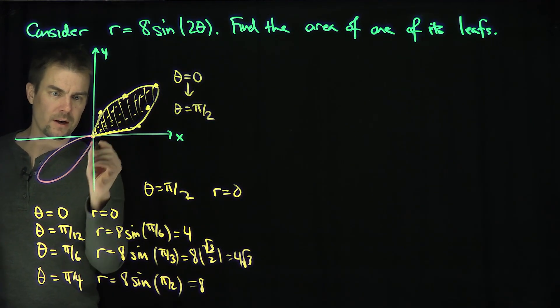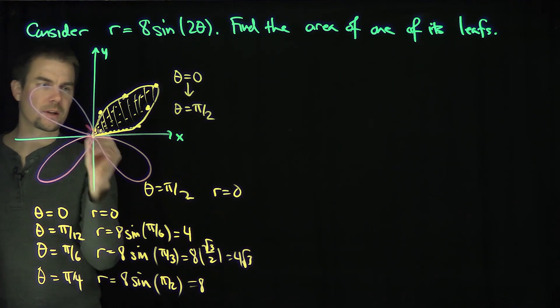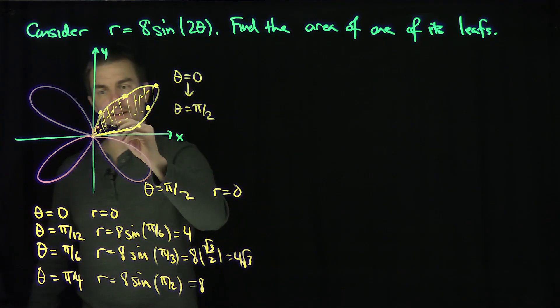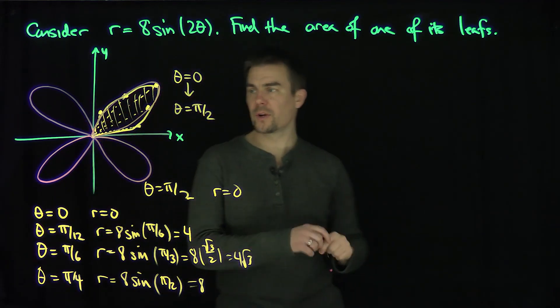It's going to do symmetric over here, a symmetric loop over here, and a symmetric loop over here. So you're going to get a polar curve that looks like this. We're interested in finding the area of this pedal of the polar curve. So let's do it.